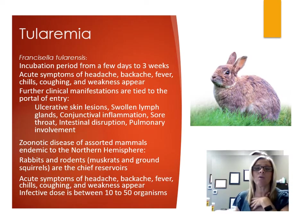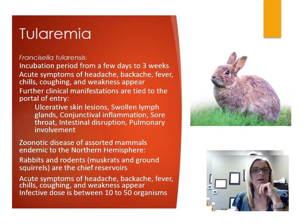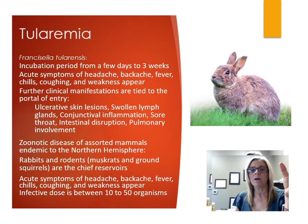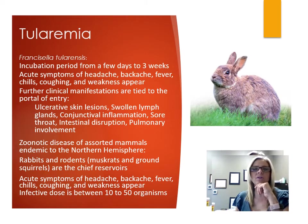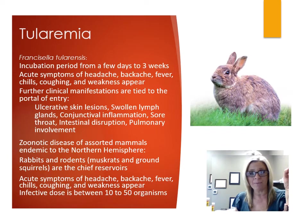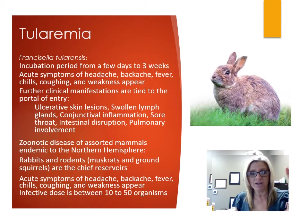Tularemia is listed as a Category A bioterrorism agent along with anthrax and plague. Rabbits and other rodents are the chief reservoirs, along with skunks, beavers, foxes, possums, and domestic animals. With the decline of rabbit hunting, tick bites have become the more common transmission route, followed by biting flies, mites, and mosquitoes. The infective dose is only 10 to 50 organisms. Cases have appeared in people who accidentally ran over dead rabbits while mowing — likely due to aerosolized bacteria being inhaled.